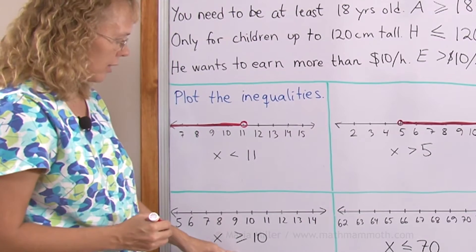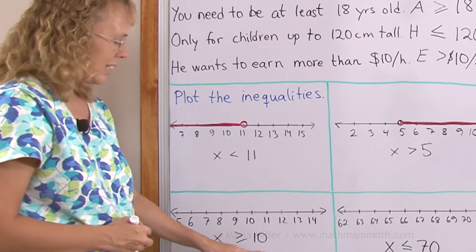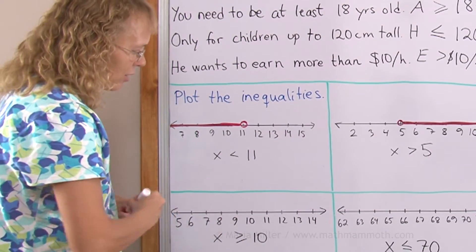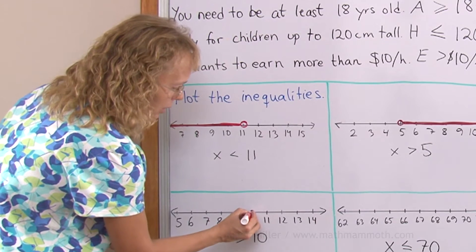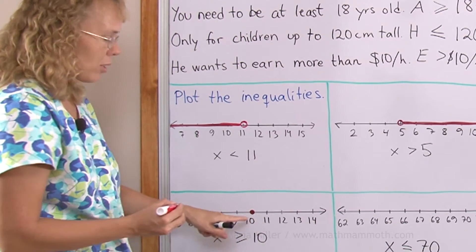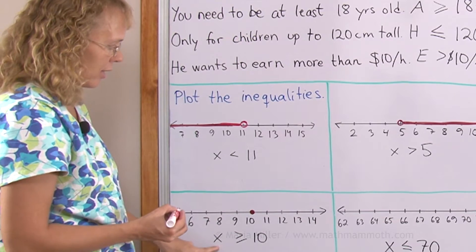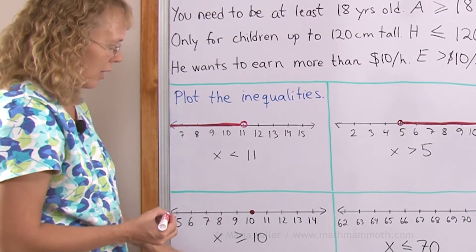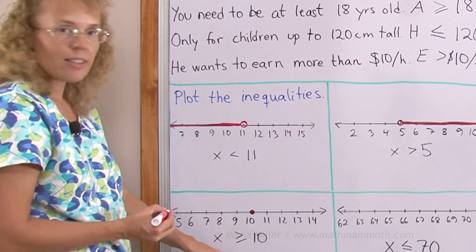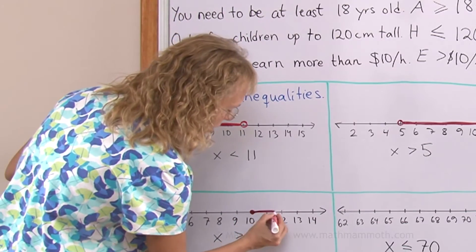Here x is greater than or equal to 10. Now 10 is included. So I will put a closed circle here. 10 will be fine. 10 is equal to 10. And then also all the numbers that are greater than 10. So I'll color everything after that.